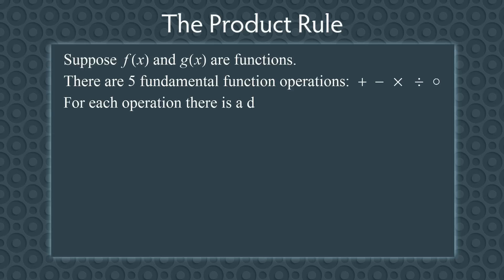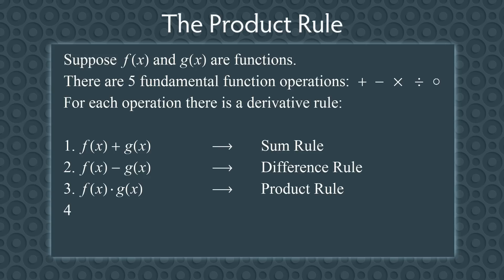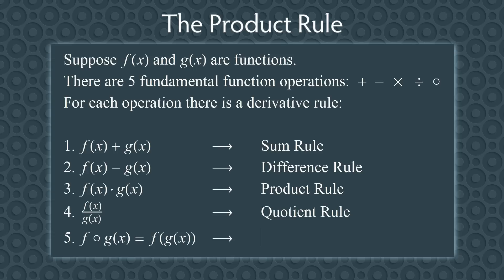For each operation there is a derivative rule. If you add two functions together, you take their derivative using the sum rule. If you subtract two functions, you use the difference rule. If you multiply two functions together, you use the product rule. If you divide one function by another, you use the quotient rule. And for function composition, you use the chain rule.